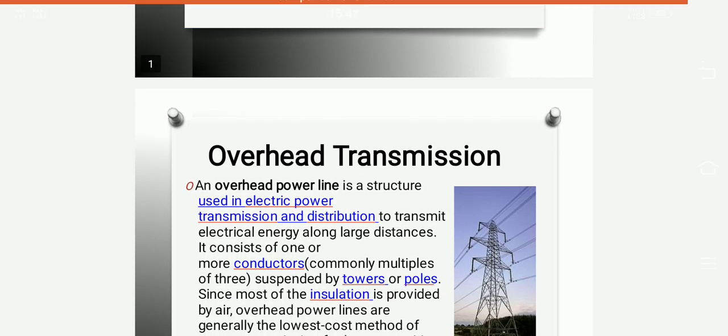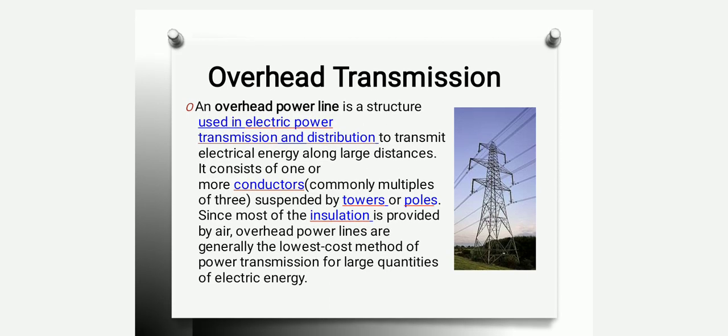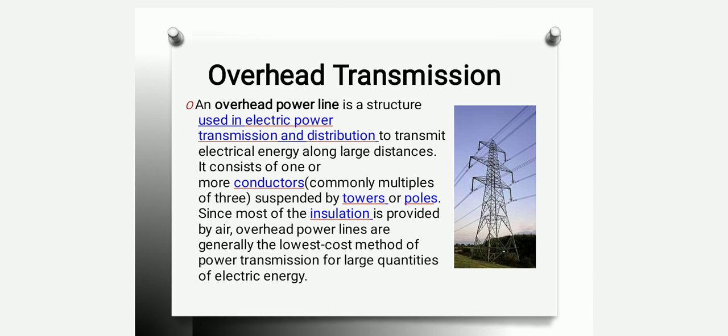Coming to the first slide, it gives an overview of the overhead transmission line — how the structure will be and for what type of power transmission we use it. It is a structure used for both transmission and distribution to transmit electrical energy over long distances. One or more conductors are used, suspended by different types of poles and towers. Proper insulation is provided with the help of air, and it is the lowest cost method of power transmission for large quantities of electrical energy compared with underground transmission.